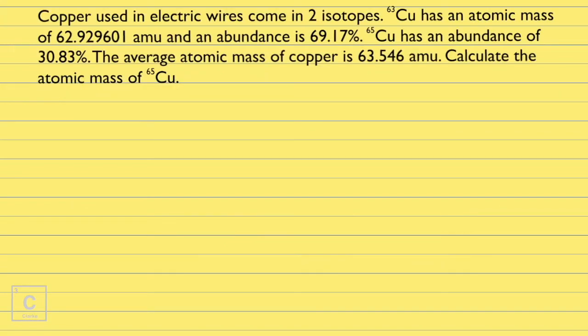Okay y'all, let's start with this problem. Copper used in electric wires come in two isotopes. Copper-63 has an atomic mass of 62.929601 amu and an abundance of 69.17%. Copper-65 has an abundance of 30.83%. The average atomic mass of copper is 63.546 amu. Calculate the atomic mass of Copper-65.